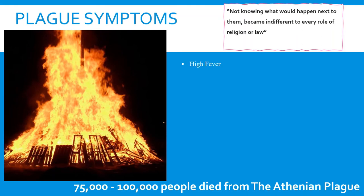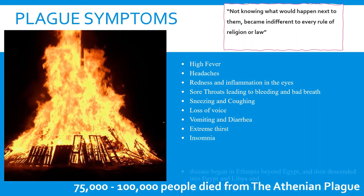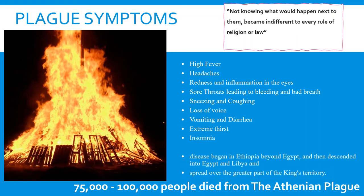The first stage of the plague was extreme fever, continuing with coughing and sneezing. The eyes were inflamed and became bloodshot red. Sore throats leading to bleeding and bad breath were followed by loss of voice and vomiting. The next stage was extreme thirst, then insomnia, trouble sleeping, and diarrhea. The plague was transmitted from person to person when touching or speaking to an infected person. There are not many differences between the Plague of Athens and COVID-19.